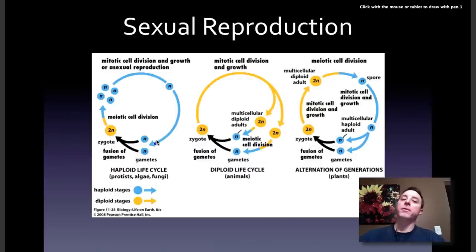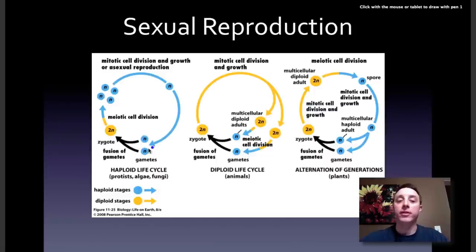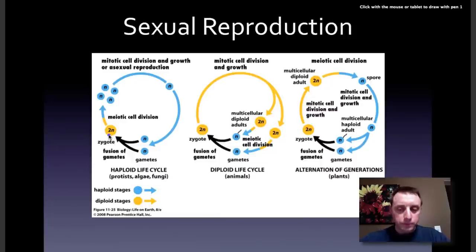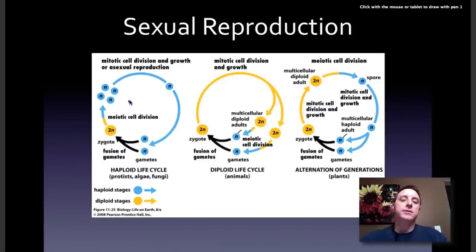Meiosis creates haploid gametes — haploid meaning that they only have one copy of every chromosome, so we call those cells N. It's important that the organism makes these haploid gametes so that during fertilization, when the gametes come together to create the first fertilized cell, the zygote, we recreate the correct diploid number. Diploid cells, 2N, have two copies of every chromosome. There are a few different sexual life cycles, so to speak.